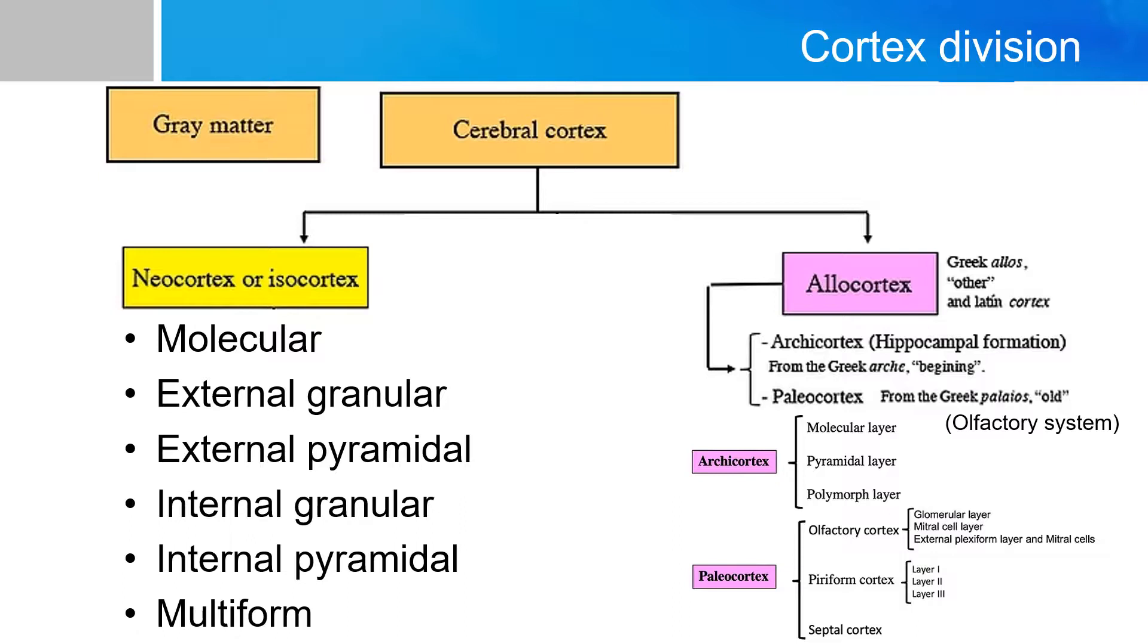And we'll cover each of those layers more in detail. The allocortex is basically, allo stands for Greek for other, meaning that they are other than the six layers of cortex as depicted in the neocortex. And under the big category of allocortex, we have archicortex and paleocortex.